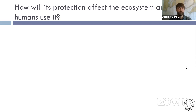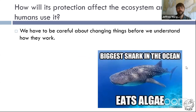Think about great whites and other marine megafauna that migrate — this is similar for shorebirds. A lot of beach communities have partial beach closures during seasons when our migratory birds are laying their eggs. So protection doesn't have to be all year. How will this protection impact the ecosystem and ultimately how we're going to use the system? We need to be careful about what we want to change before we understand how that change is going to happen.